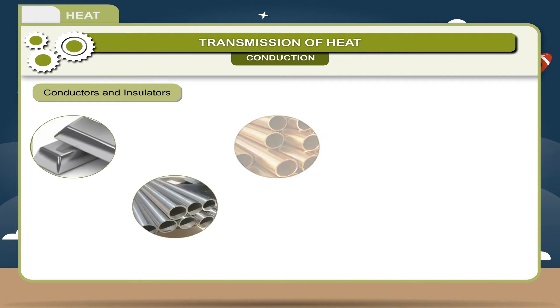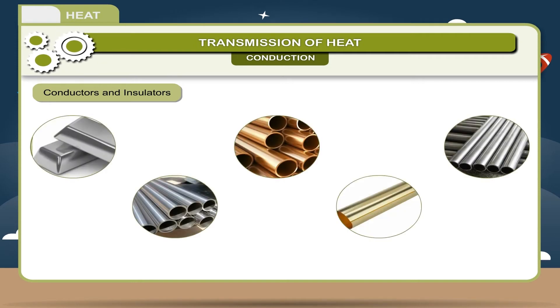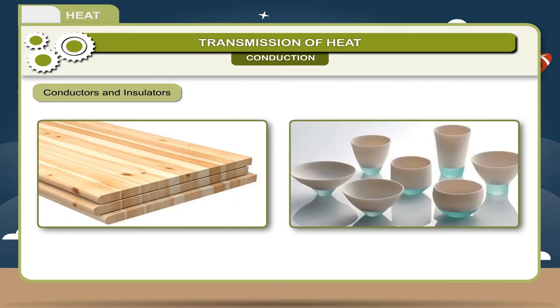Conductors and insulators: all metals do not allow heat to pass through them with equal ease. Some allow heat to pass faster through them, whereas some solids do not allow heat to pass through them at all.